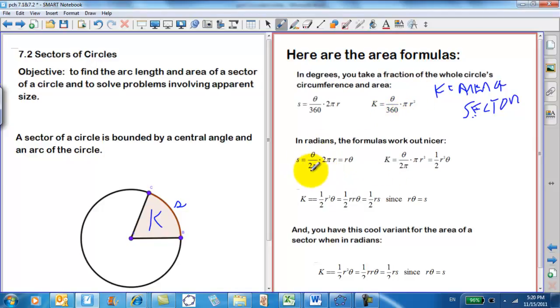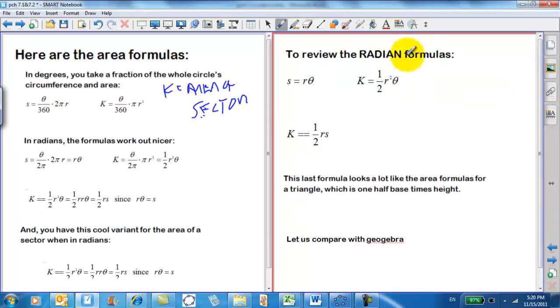In radians, these formulas all work out nicer because you do the same ratio over 2 pi now, and the 2 pi cancel out there, you get S equals r theta. That's the formula we had before. And for the area, theta over 2 pi times pi r squared. So the pi's cancel out, and you get 1 half r squared theta. You can do a little manipulation. You replace an r theta with S, since r theta equals S, and you get 1 half r S. So there's some nice variance there. Here's a review of the radian formulas. S equals r theta, defining the arc length. Area is 1 half r squared theta. Or you can use area equals 1 half r S. This last formula looks a lot like the area formula for a triangle, 1 half base times height.